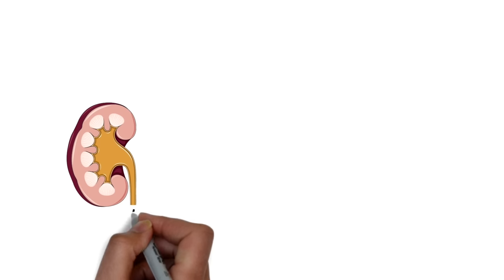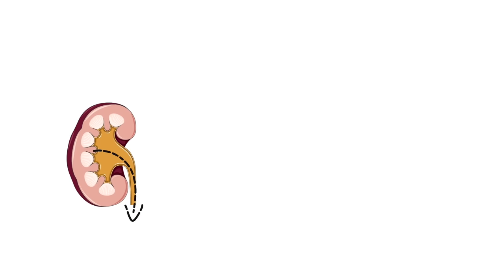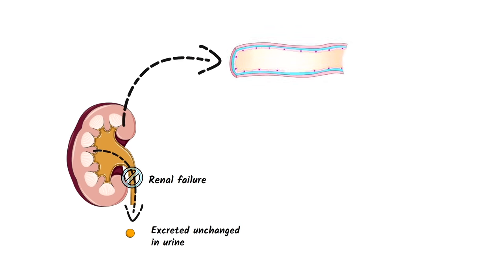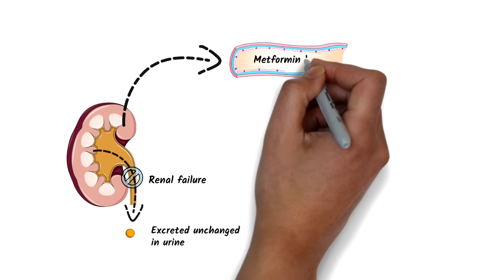Now the side effect we need to worry about is lactic acidosis. It more commonly occurs in renal failure patients, as metformin is excreted unchanged in urine. In renal failure patients, the excretion of metformin is decreased and its level increases in blood.